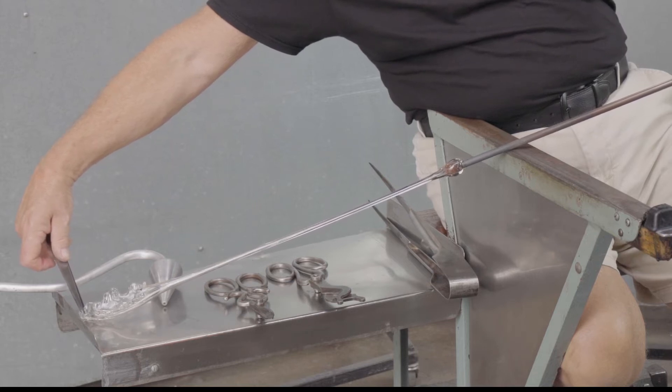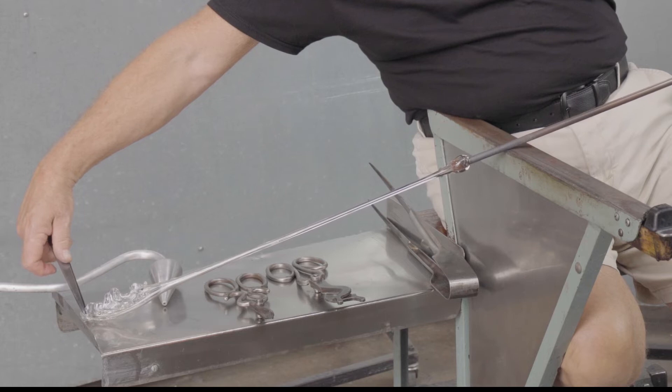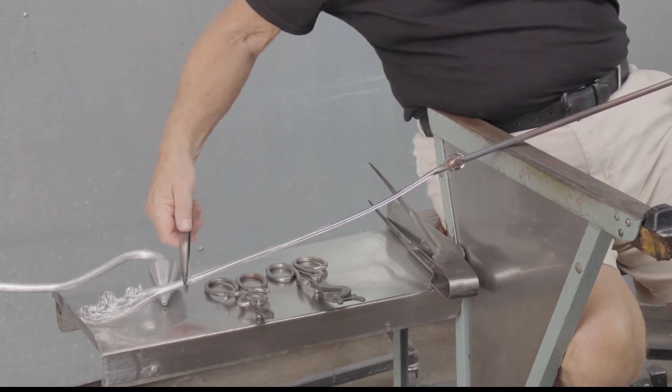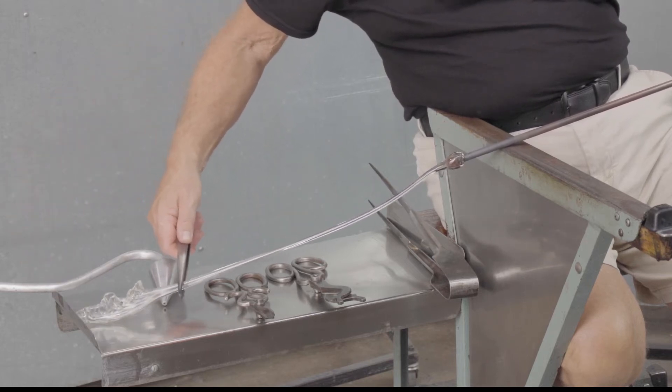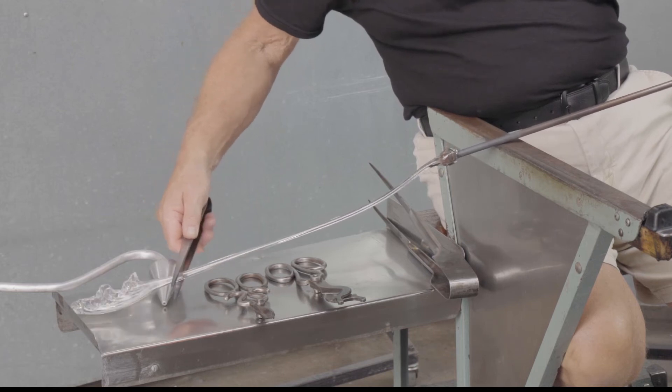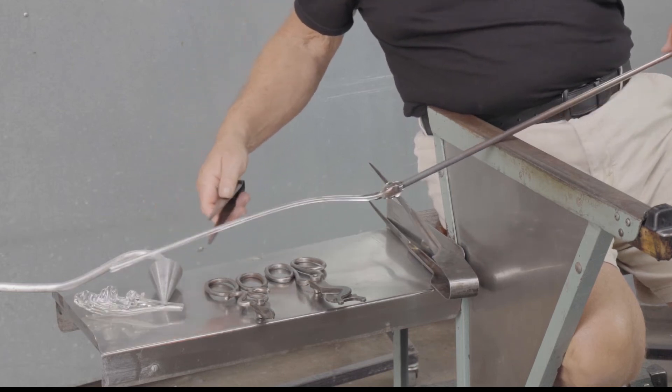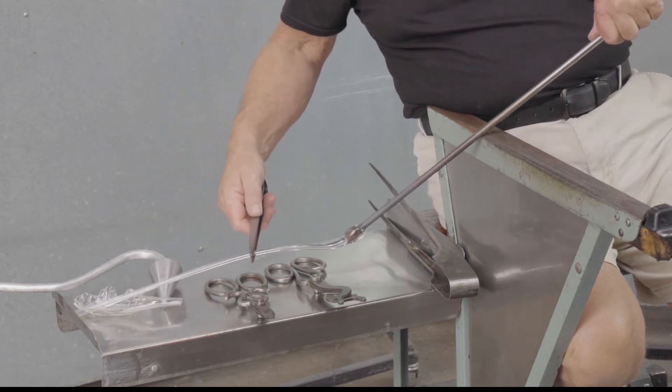To cut the tubing, the tips of the pincers are held against the tube, it's tapped, and this breaks the tubing. At this point the tubing is about 900 to 1,000 degrees Fahrenheit.